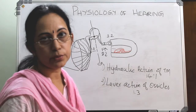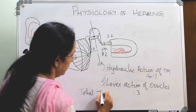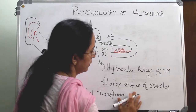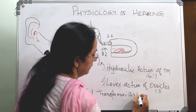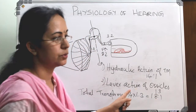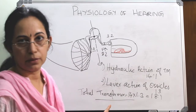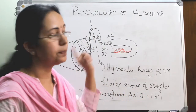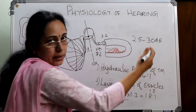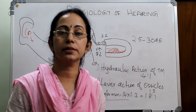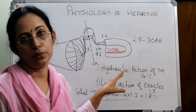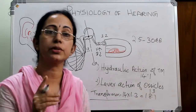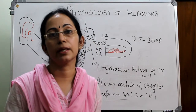The total transformer ratio equals 14 multiplied by 1.3, which corresponds to 18 to 1. So this is the total transformer ratio of 18 to 1. Low pressure, high displacement waves are converted into high pressure, low displacement waves — a 25 to 30 dB increase in sound energy reaching the cochlea. This is how the impedance mismatch is corrected by the middle ear, mainly by the hydraulic action of the tympanic membrane and the lever action of the ossicles.